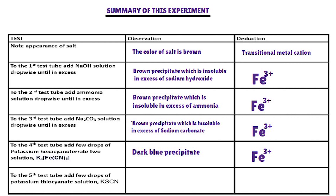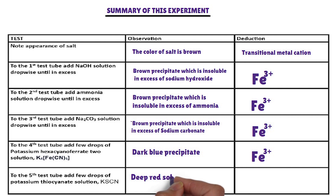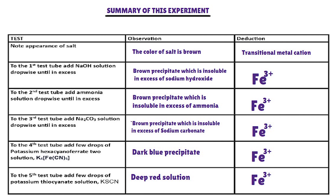Second confirmatory test: in the fifth test tube, potassium thiocyanate solution is added. The cation that forms a deep red solution with potassium thiocyanate is iron-3-ion. In the description there are links for testing cations and anions. Thank you for watching.